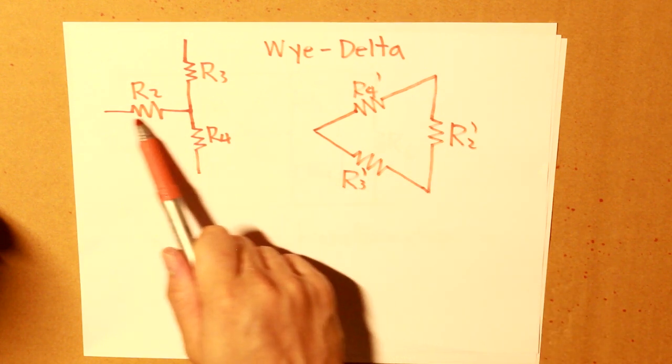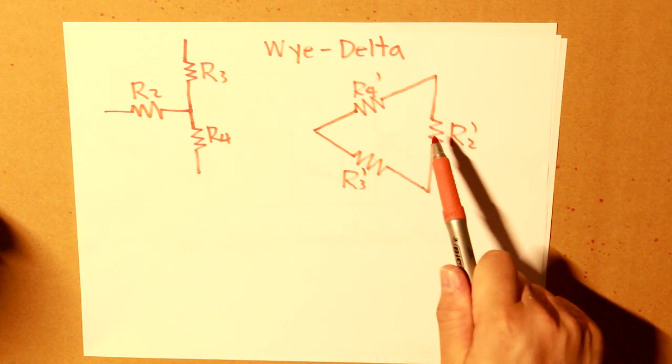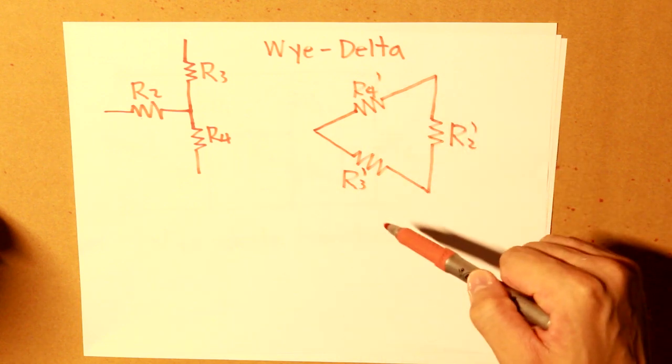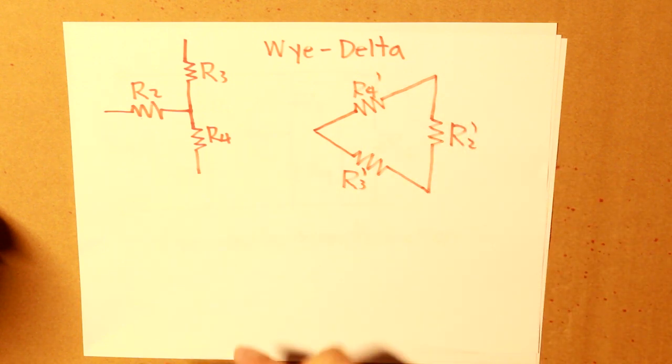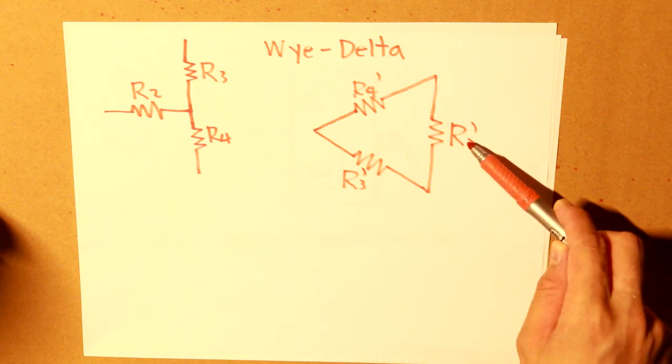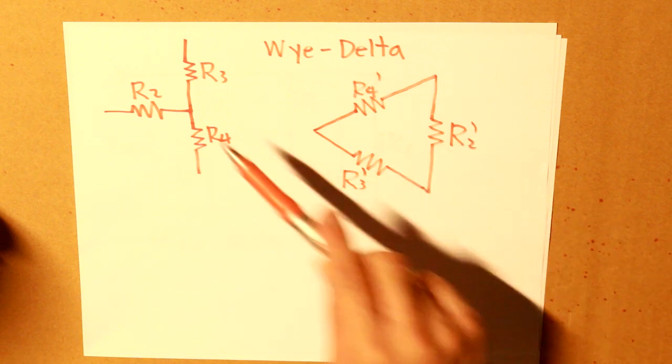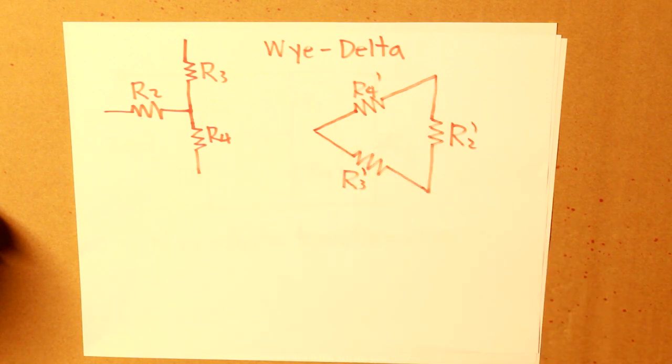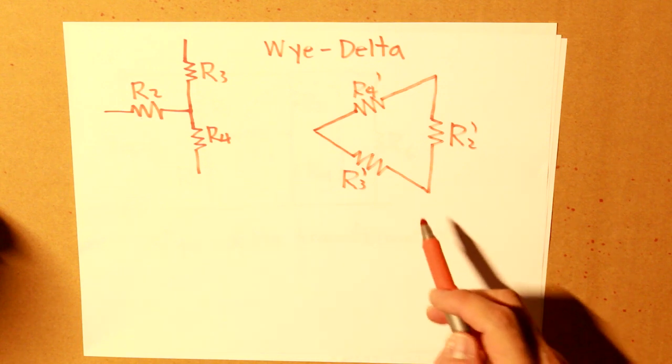So as you can see here, R2 is right here in the new formation. It's at the right side of the circuit. Before it was the left side, now it's all the way to the right side. And vice versa, R3 is down here now and R4 is up here now.